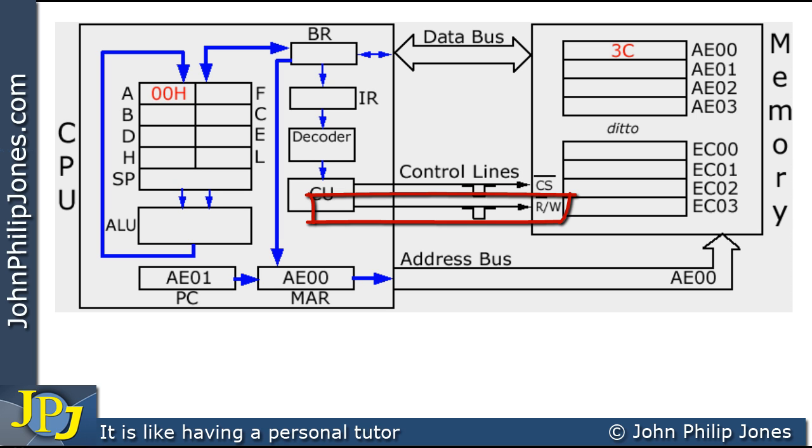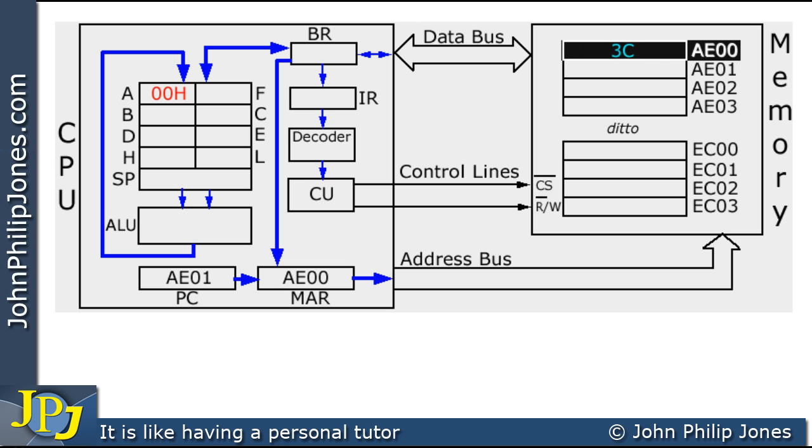The low pulse on the read-write line is responsible for ensuring that the location selected is read from. The result is that this particular location is selected and the 3C is going to be read.